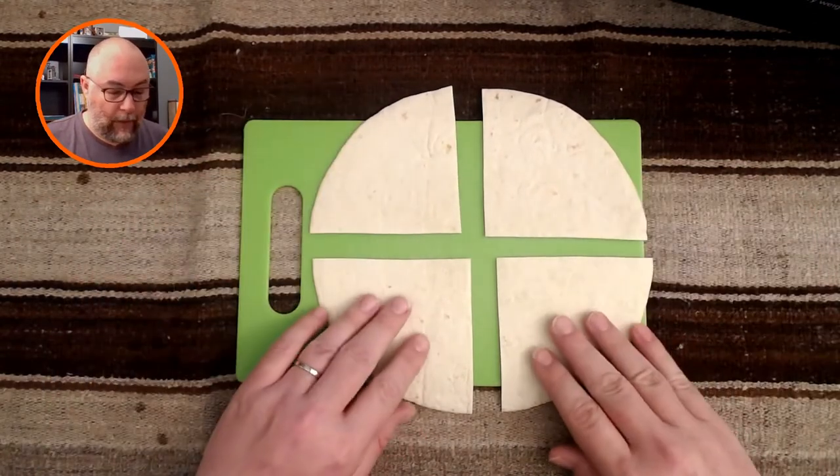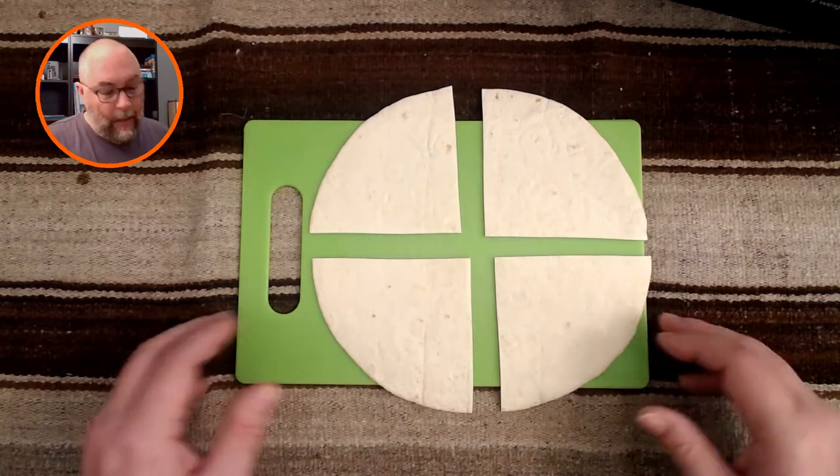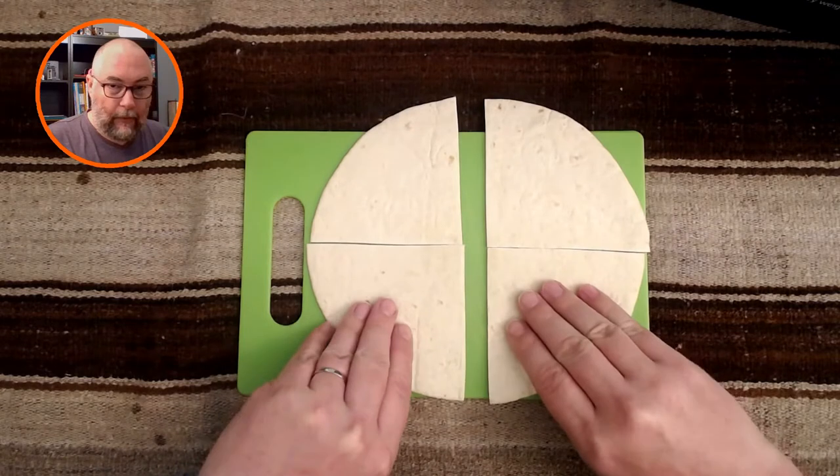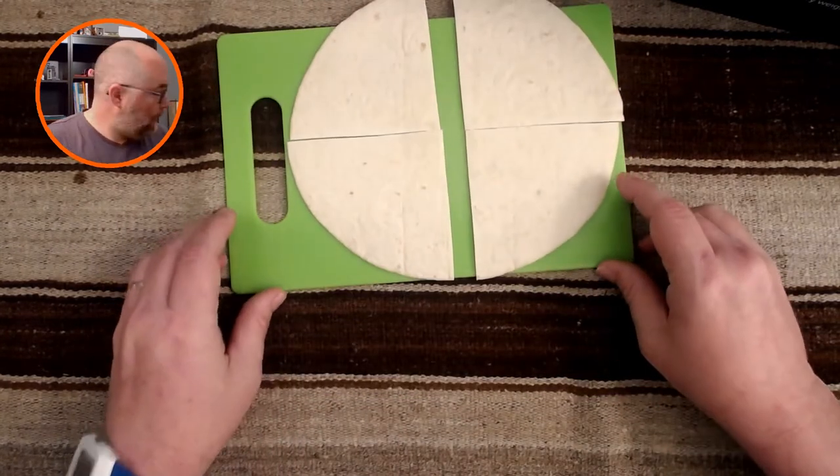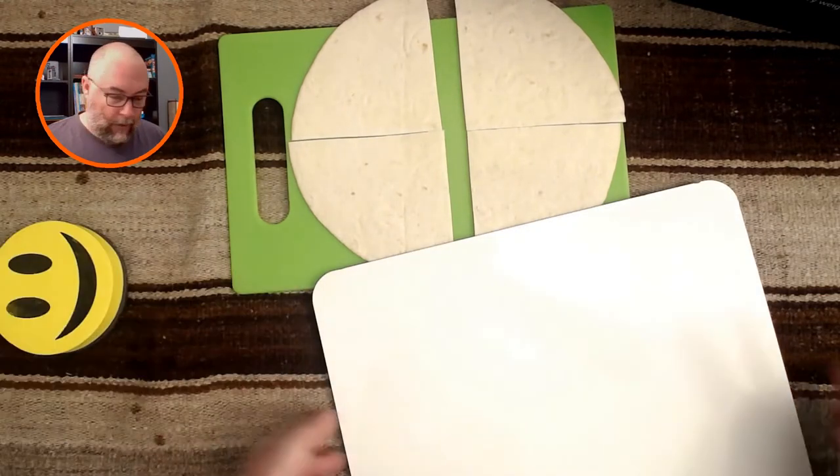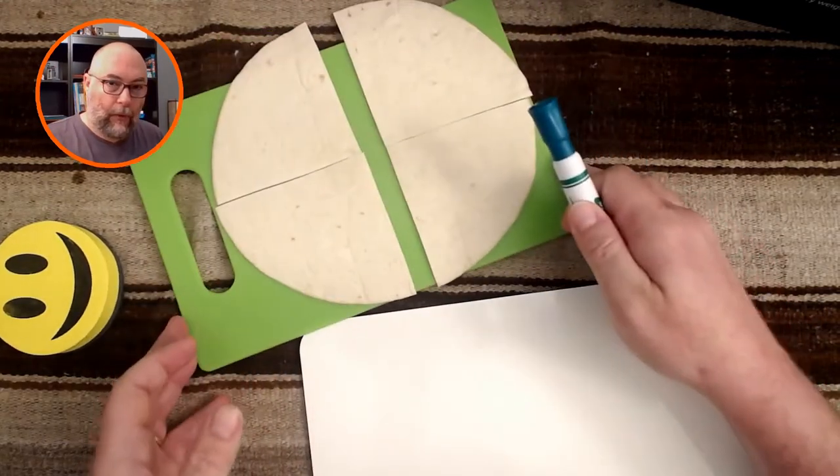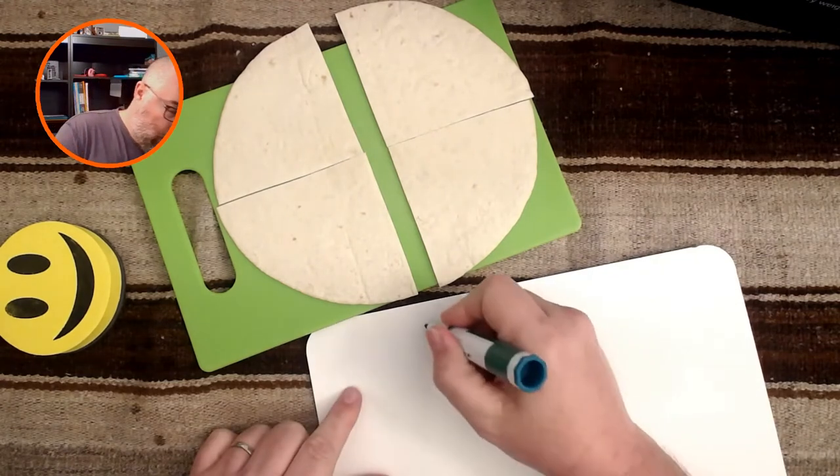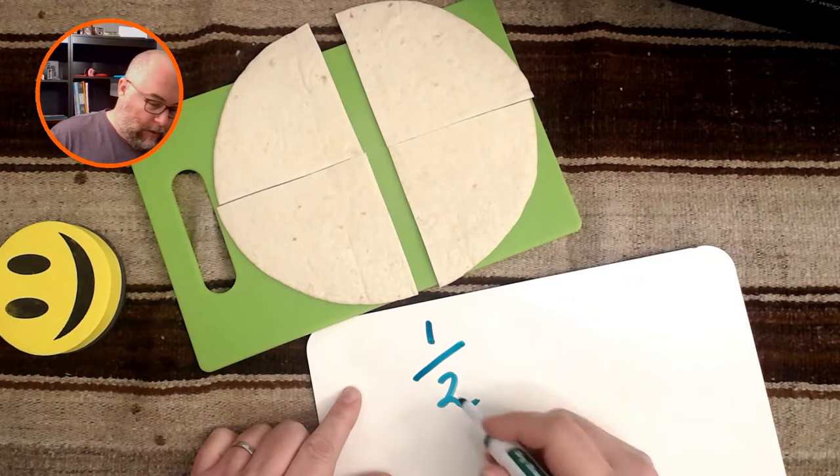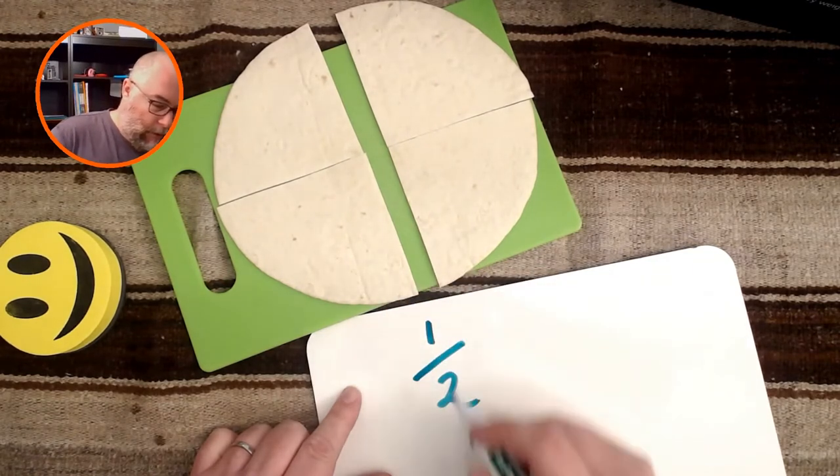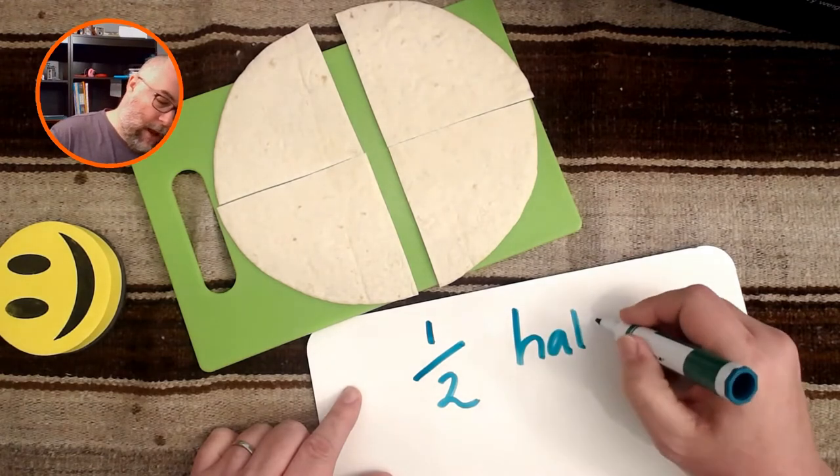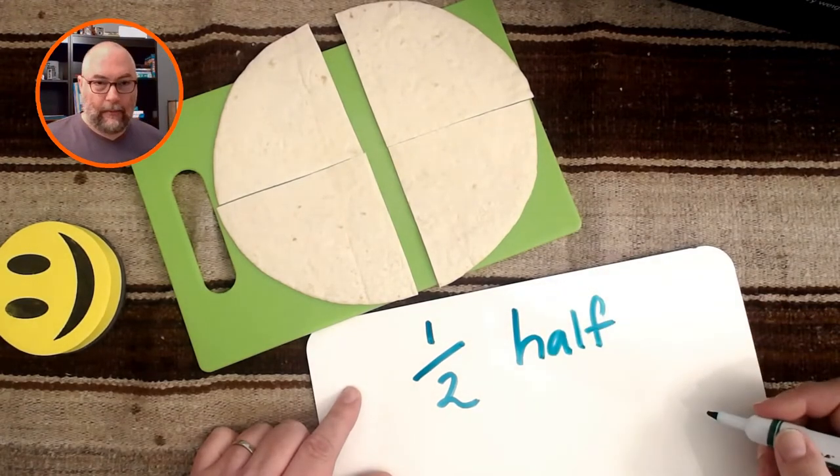So let's learn how to write this. If I have two equal size pieces of a tortilla, those are called halves. I'm going to get my whiteboard here. I'm going to write that down for you. So now we have two equal sizes, two equal pieces. It's called one half. See? I have two pieces. One, two. And so I put the two on the bottom. And that is called half.